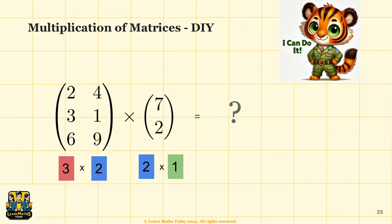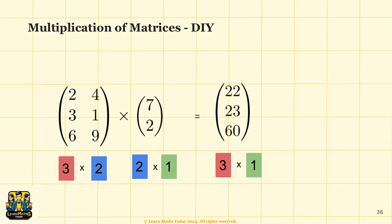Now here is a simple exercise where you multiply a 3 by 2 matrix with a 2 by 1 matrix. Take 30 seconds to try to do this on your own. Did you get the correct answer? If not, just try again — I'm pretty sure you can figure this out.